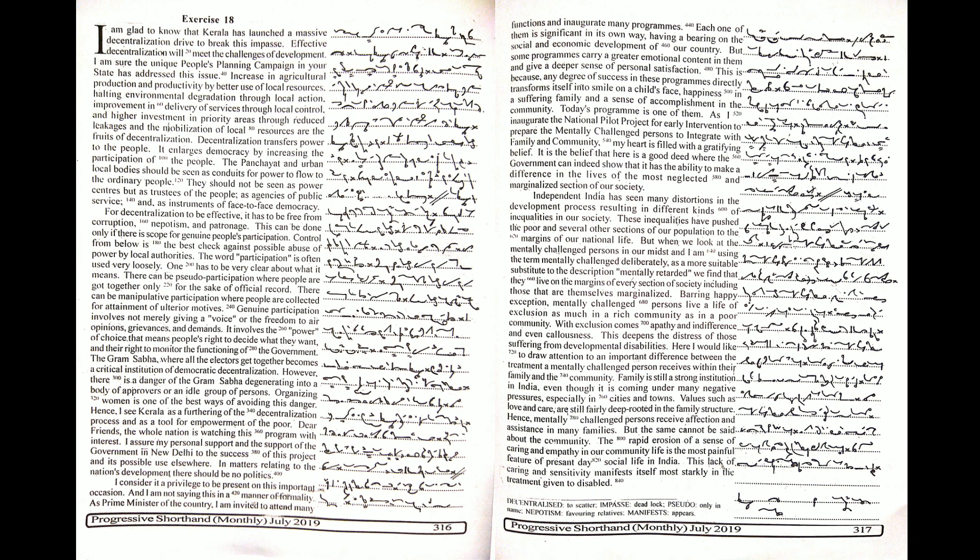The Gram Sabha, where all the electors get together, becomes a critical institution of democratic decentralization. However, there is a danger of the Gram Sabha degenerating into a body of approvers or an idle group of persons. Organizing women is one of the best ways of avoiding this danger.